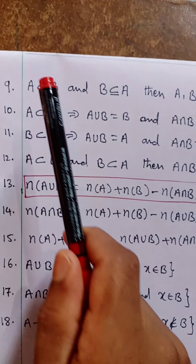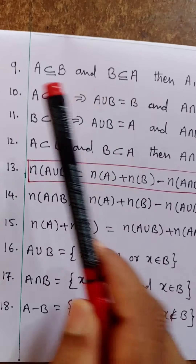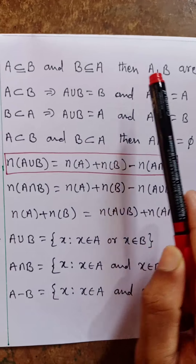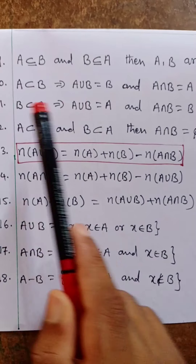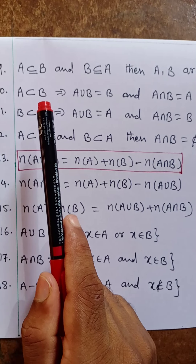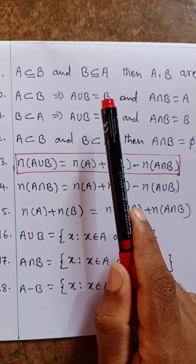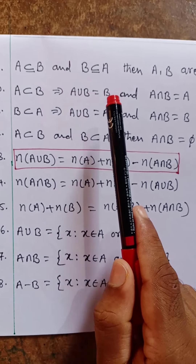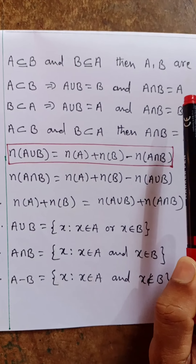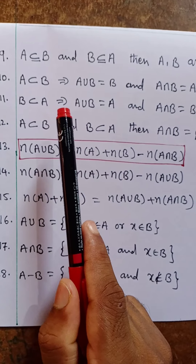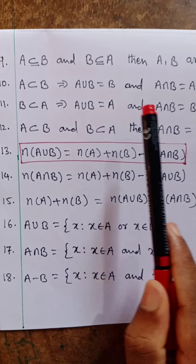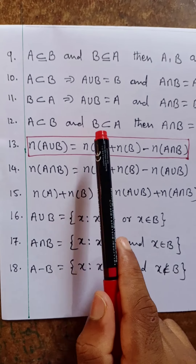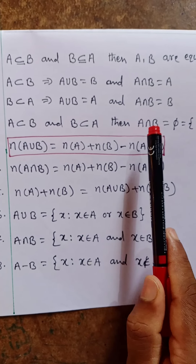Very important — bit paper questions. Ninth one: if A subset of B and B subset of A, then A and B are equal sets. Tenth one: if A subset of B, then A union B equal to B, and A intersection B equal to A. Union gives the bigger set; intersection gives the smaller set. Similarly, if B subset of A, then A union B equal to A and A intersection B equal to B.